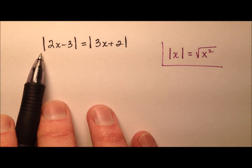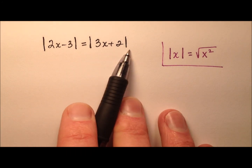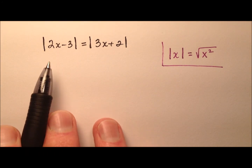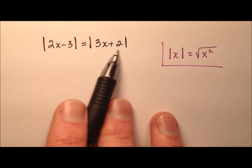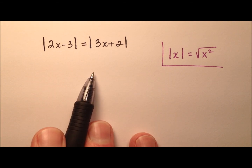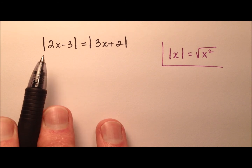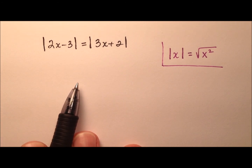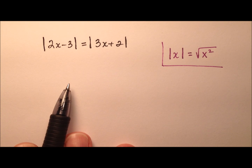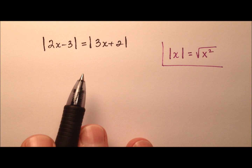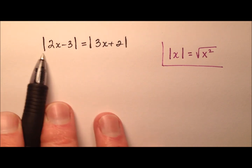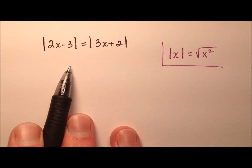In this video, I want to take a look at solving absolute value equations that contain two absolute value expressions. We're going to look at two separate examples, and in each example I want to tackle these problems two different ways. One of these ways is interesting but not very practical, and the other way is much more practical but probably not very interesting. So let's go ahead and look at this first example.